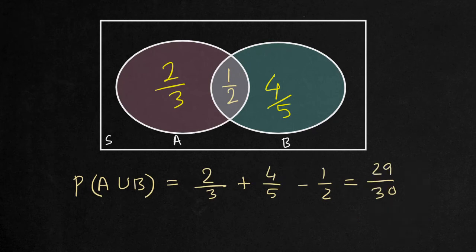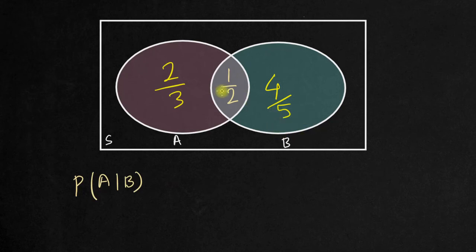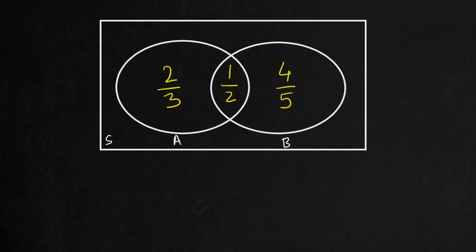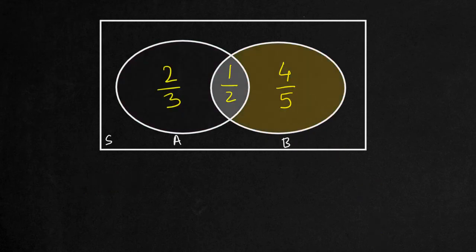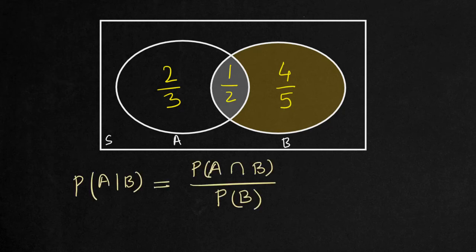The question is: if B is already occurred, then what is the probability of A? This is P of A and B, 1 by 2, over P of B, 4 by 5.